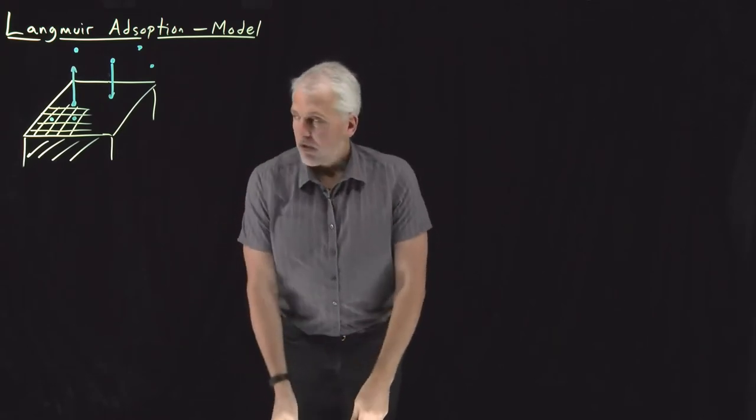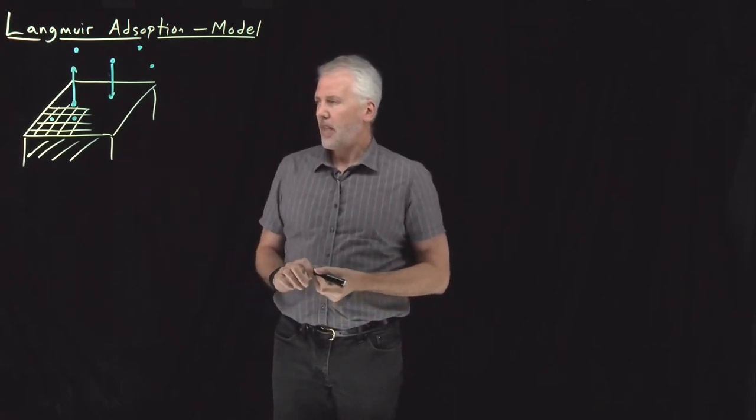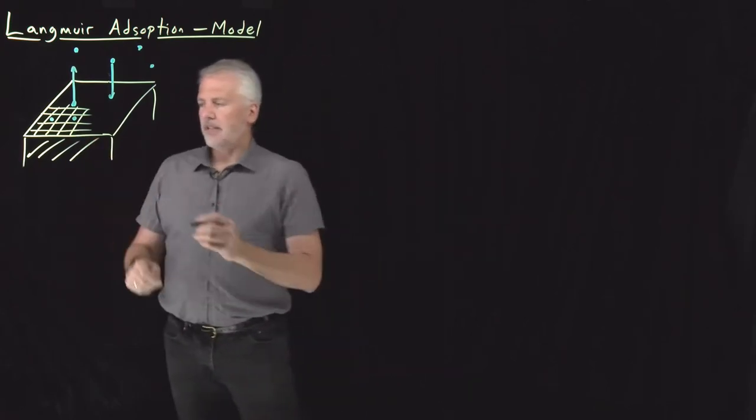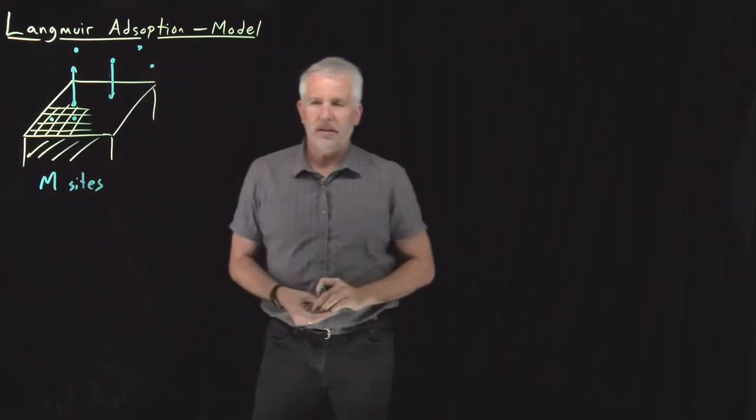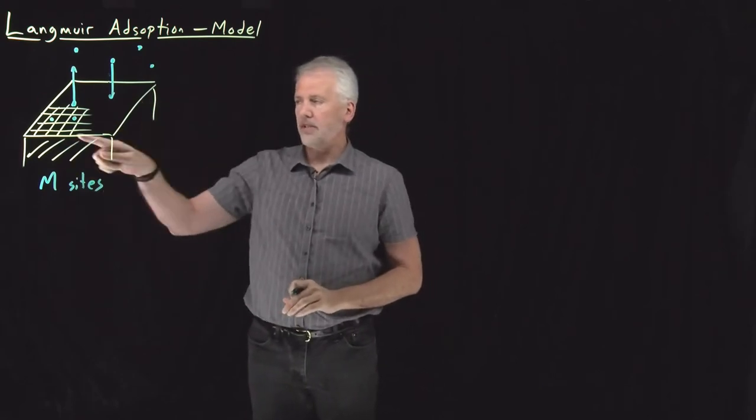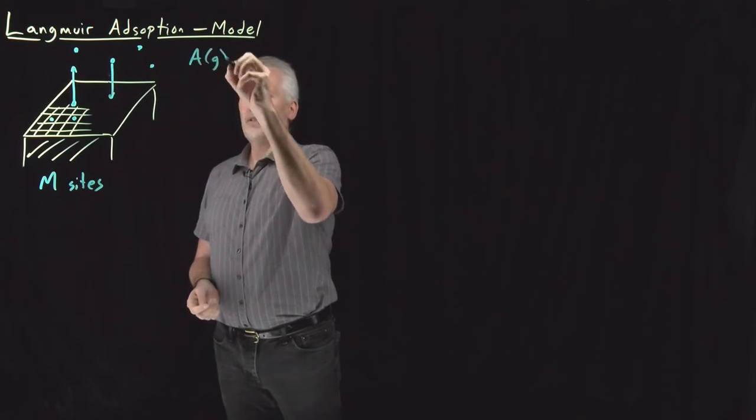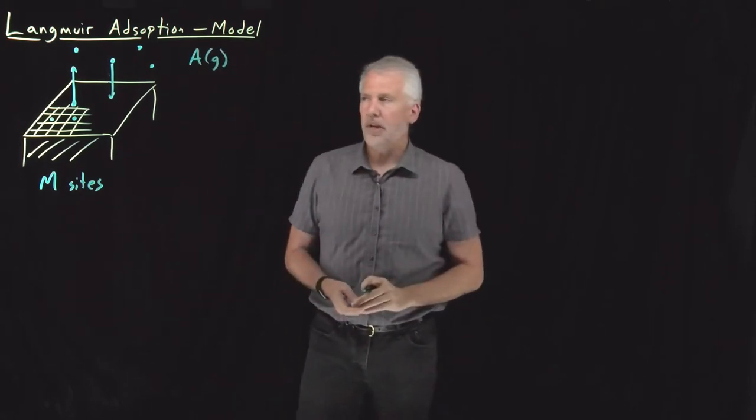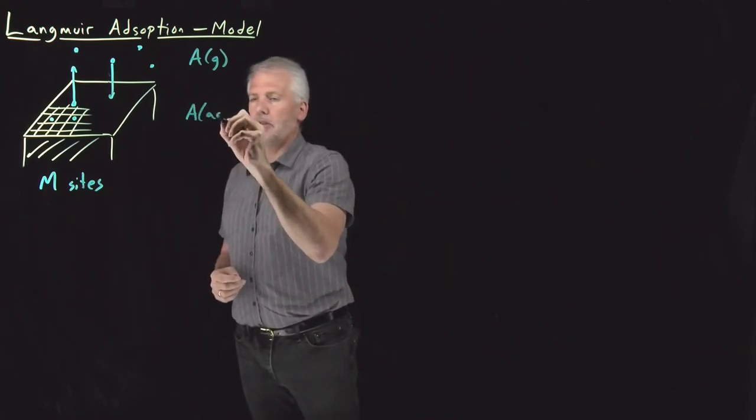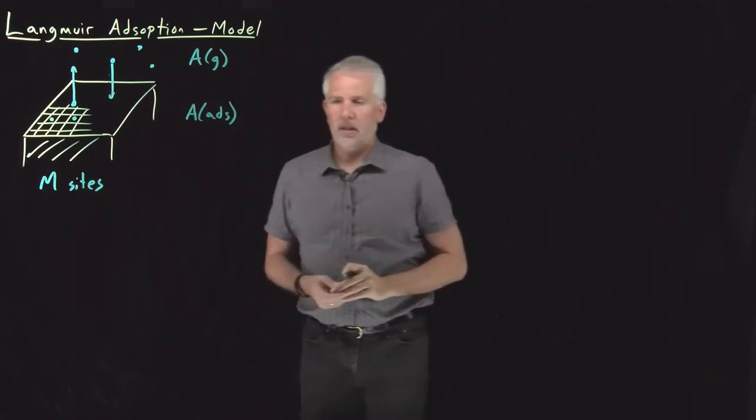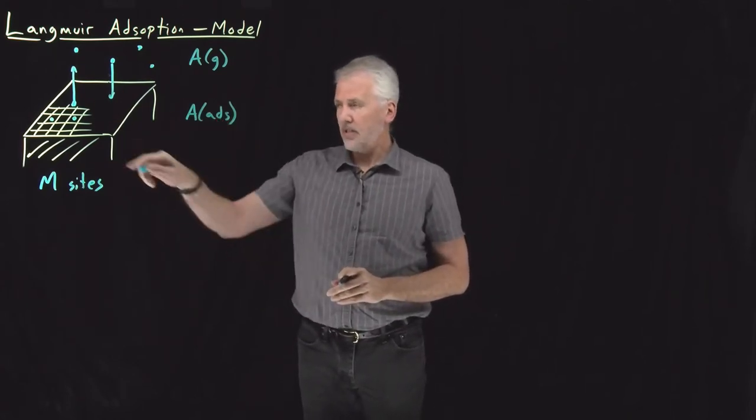These lattice sites can contain a molecule or not. The molecules can desorb off the surface once they've adsorbed, or adsorb onto the surface from the gas or solution phase. To define that model a little more carefully, I've got a certain number of lattice sites. Let's say there's a total number of sites, M lattice sites on the surface. Let's assume these are in the gas phase for now. We've got molecules up in the gas phase, and we've got the same molecule in the adsorbed phase when it's stuck to the surface.